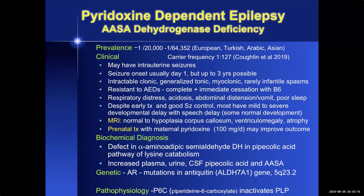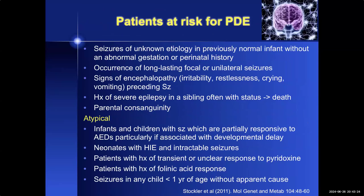Pathophysiology relates to the production of piperidine-6-carboxylate, which inactivates PLP. From our CIHR Canadian Metabolic Epilepsy Consensus Meeting, the clinical factors that should make one suspect PDE include seizures of unknown etiology in a previously normal infant without an abnormal gestation or perinatal history, occurrence of long-lasting focal or unilateral seizures, signs of encephalopathy preceding the seizures, history of severe epilepsy in a sibling often with status leading to death, and parental consanguinity. Atypical presentations include infants partially responsive to AEDs with developmental delay, neonates with HIE and intractable seizures, patients with a history of transient response to pyridoxine or folinic acid response, and seizures in any child less than one year of age without apparent cause.